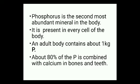Phosphorus is an intracellular ion that is present within the cell. Phosphorus is the second most abundant mineral in our body. As you have studied, calcium is the most abundant — it is first. After calcium, the most abundant mineral in our body is phosphorus. Phosphorus is present in every cell of the body. In an adult body, almost 1 kg of phosphorus is present.